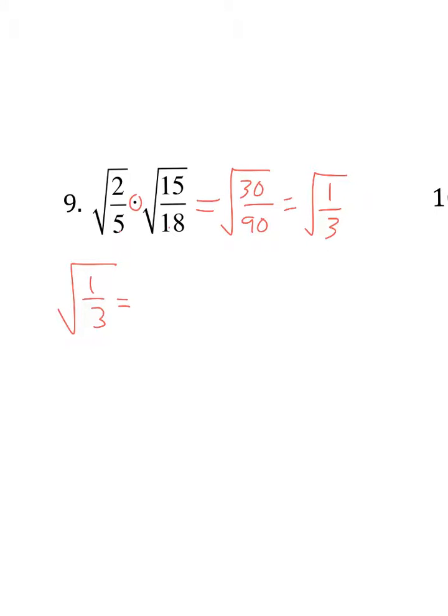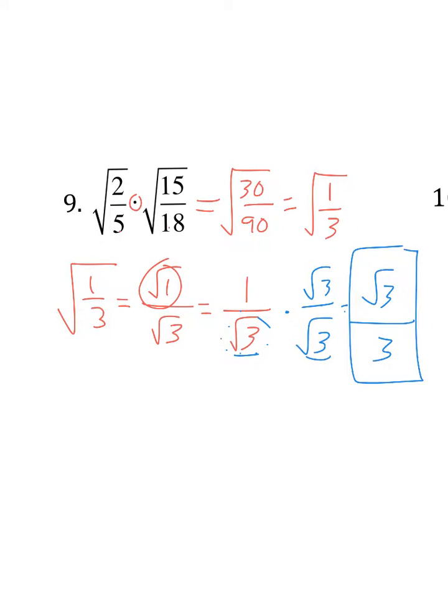So I'm dealing with the square root of 1 third. Again, just like we did above, make it radical over radical. Look for any perfect squares. Got one. Square root of 1 is just 1. It's still over the square root of 3, and that is a problem. So you multiply top and bottom by square root of 3. Then you get square root of 3 on top. Square root of 3 times square root of 3 is just 3 on the bottom.